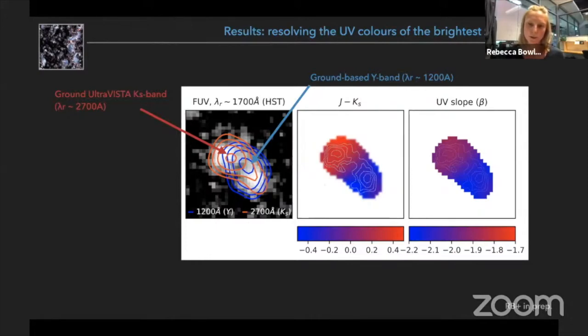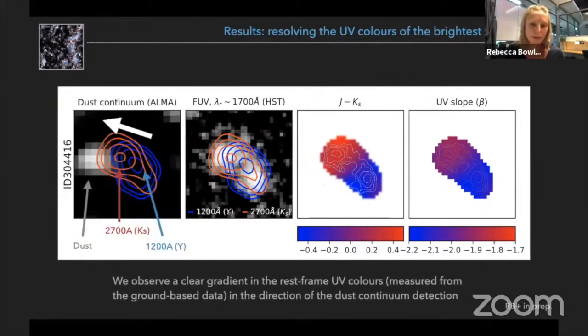So how does this color gradient we see in this source correspond to the dust continuum emission that we detect? And I've already shown you this, but here it is again. And in this scaling, the background here is the ALMA data, that white blob is the dust continuum centroid.